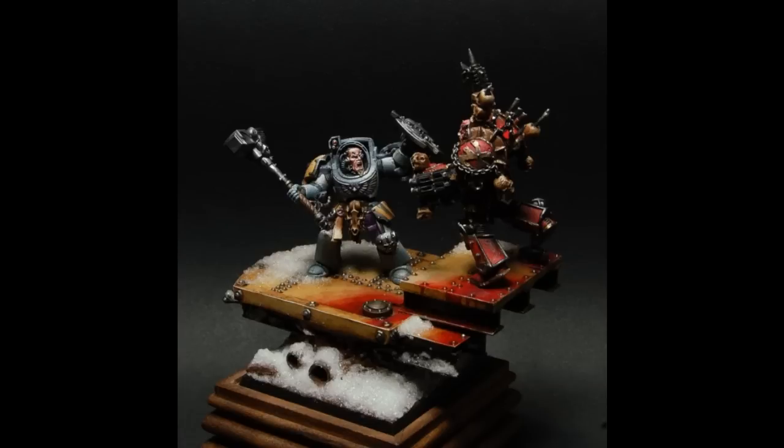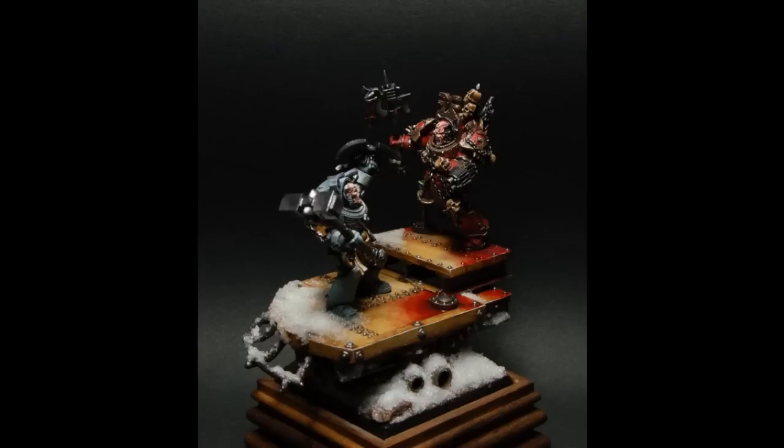Matthew used the Secret Weapon Scenics Crushed Glass to create that snow effect by mixing it with some gloss medium, very similar to the realistic water that comes with our crushed glass bundle. From every angle you can see that this creates a wet, glistening, slushy looking snow.